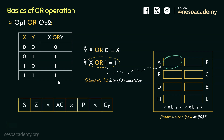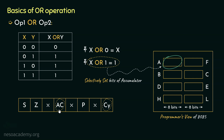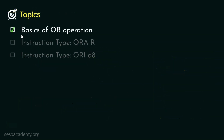Let's now talk about the flags register. Since we are dealing with logical instructions, the status of the carry and auxiliary carry flag is predefined. In case of AND, the carry flag was reset and the auxiliary carry flag was set. But that's not the case for OR operation — Intel has specified that in case of OR operation, both the carry and the auxiliary carry will be reset. The remaining flags will depend on the content of the accumulator after the operation has been performed.